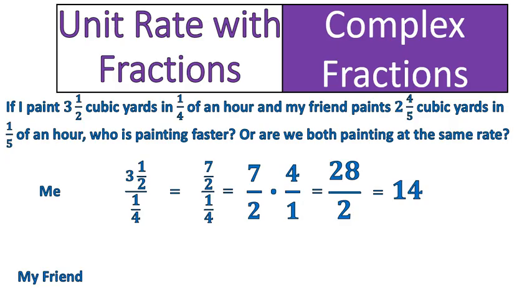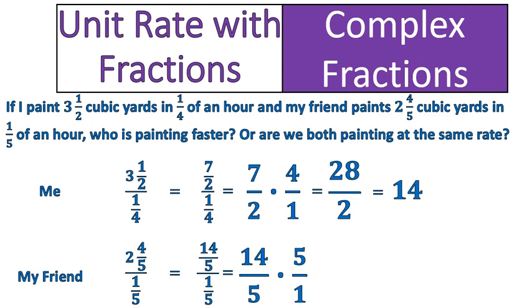Now let's look at my friend. Two and four fifths cubic yards in one fifth of an hour. I'll follow the same steps — first convert the mixed number to an improper fraction. Dividing is the same as multiplying by the reciprocal, so 14 over 5 times the reciprocal of one fifth, which is 5 over 1, gives me 70 over 5. When we simplify that, we get 14. Both my friend and I are painting at the same exact rate: 14 cubic yards per hour.